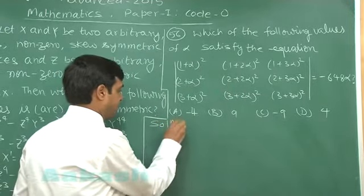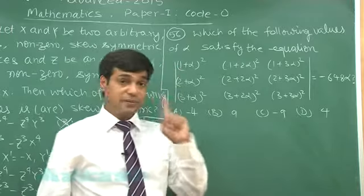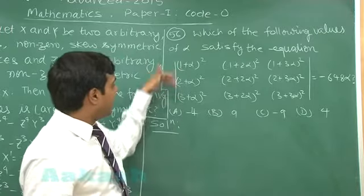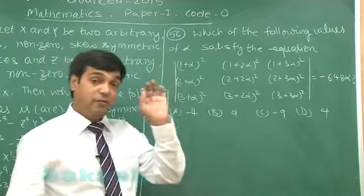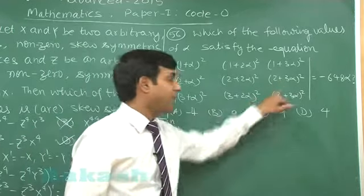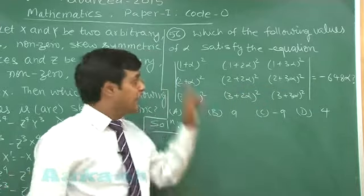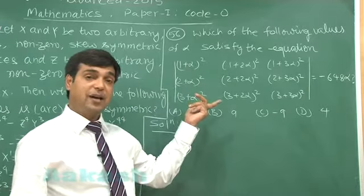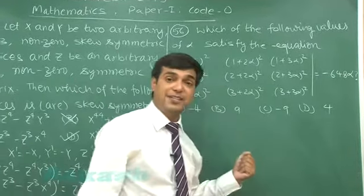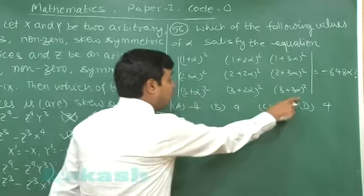Options are given, right? Let us go for the solution of it. We can start this question in two different ways. One: R2 minus R1, R3 minus R1. When I apply these operations, I observe square of alpha terms cancelled out. A simple determinant is left with us. Another property of R3 minus R1 type will give me the result. Or option two: I can look at it as the product of two determinants.